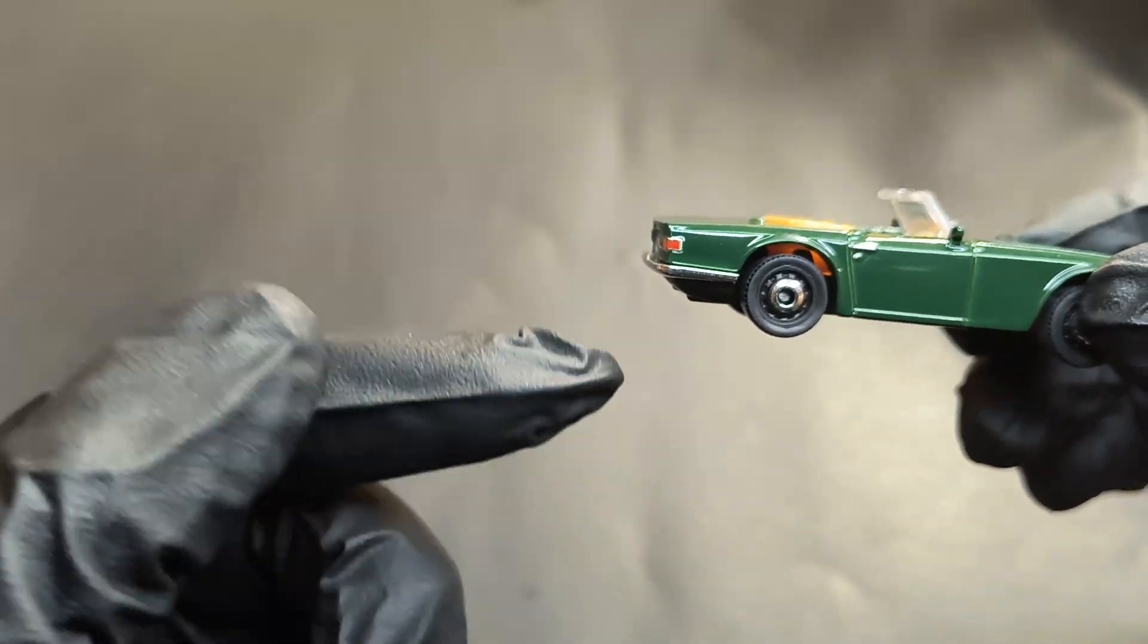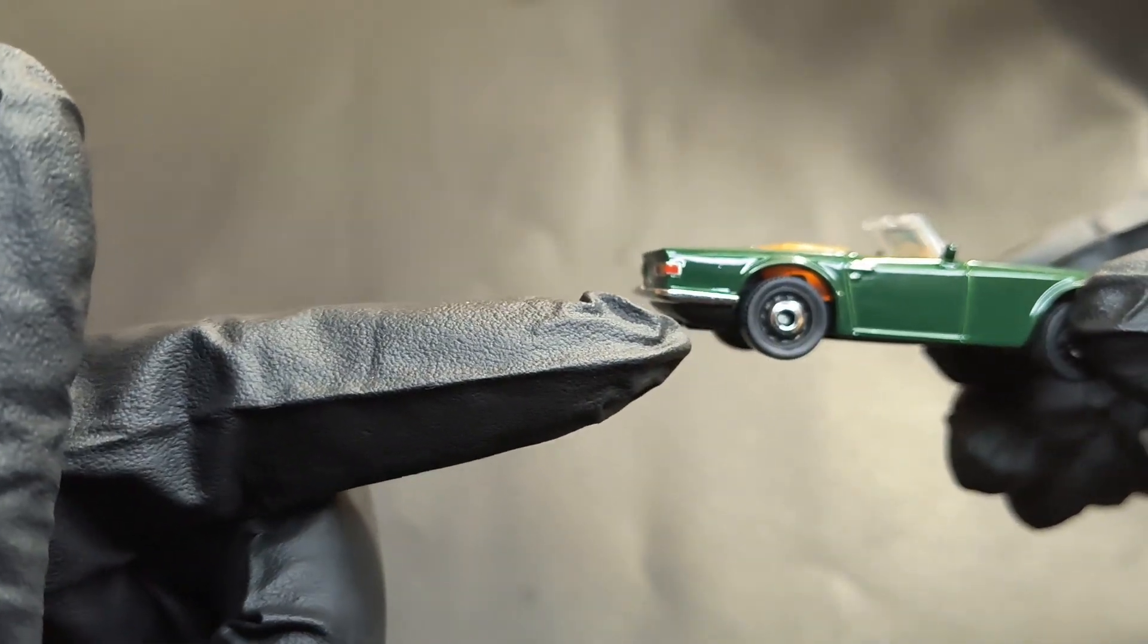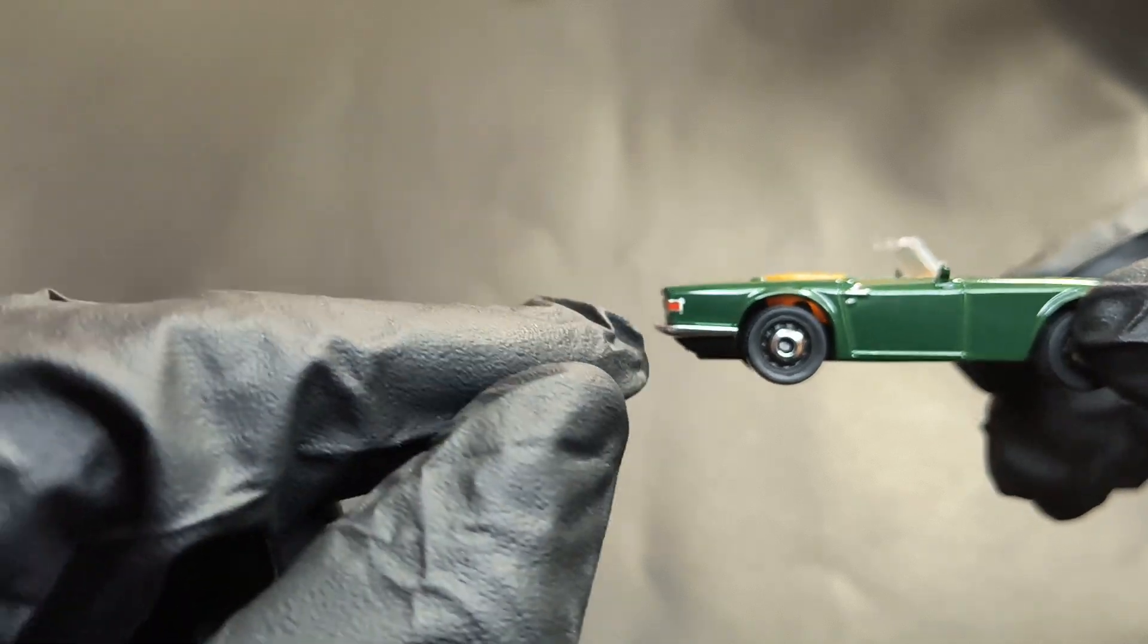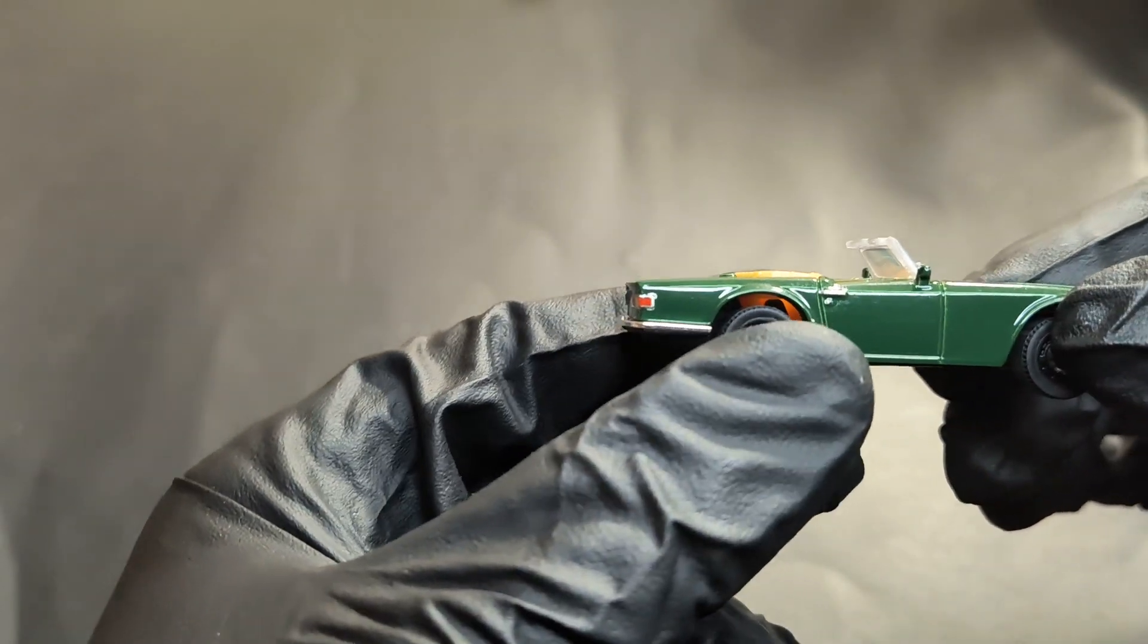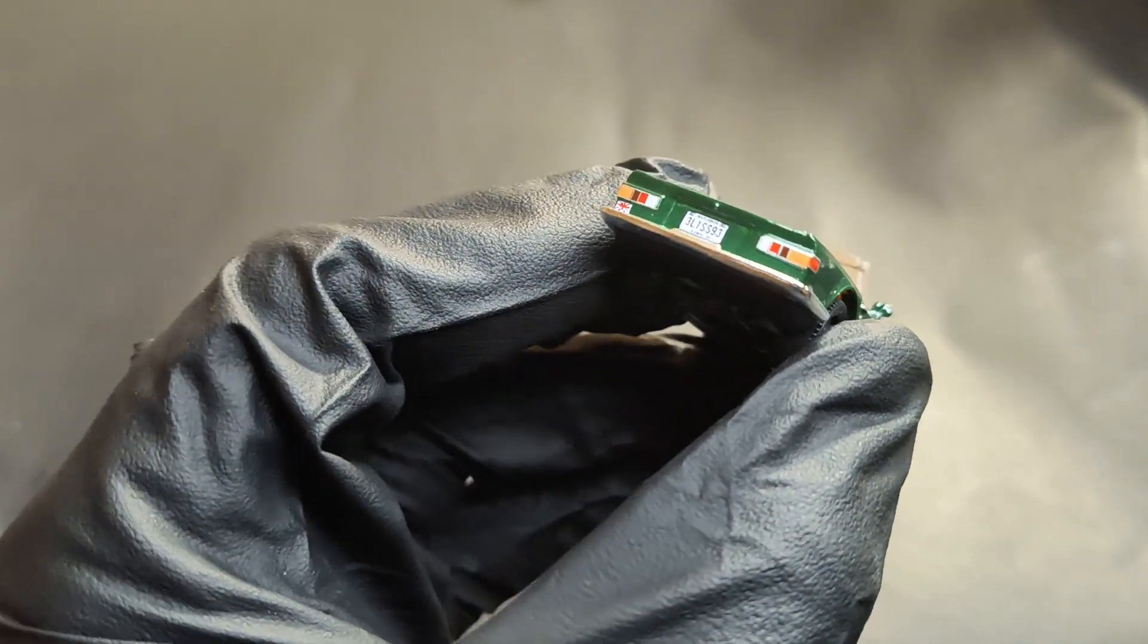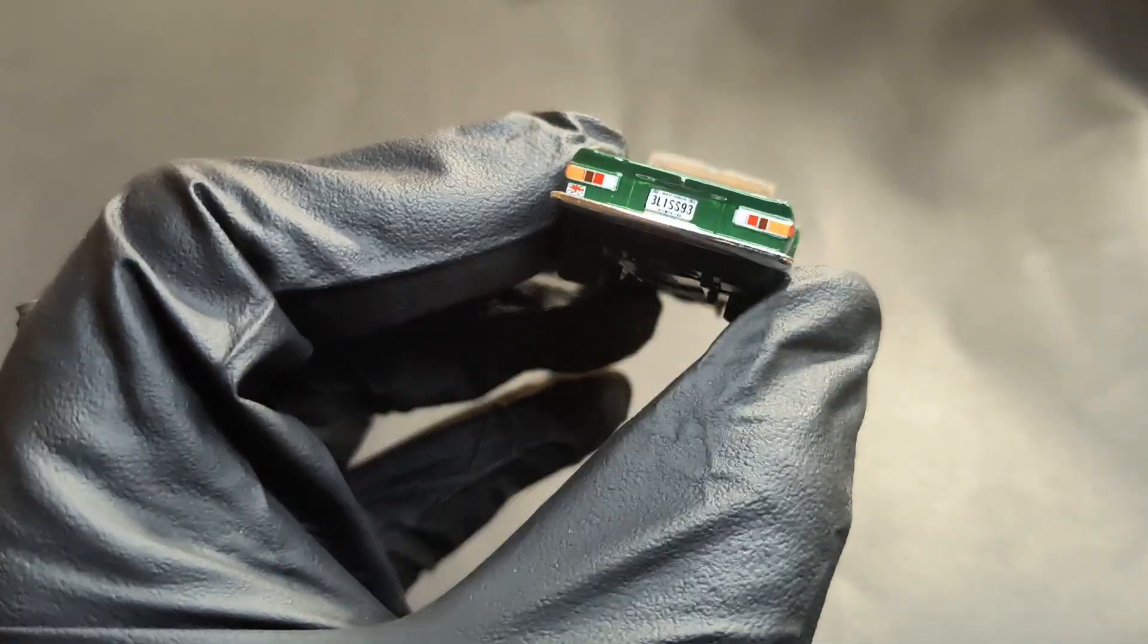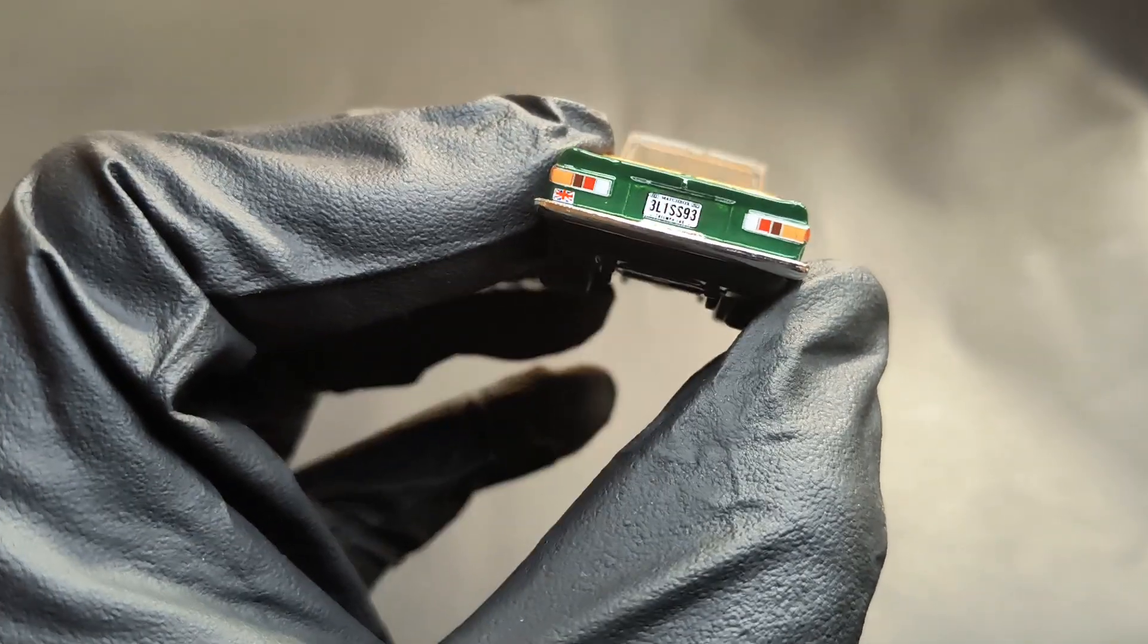Even from the side, you can notice the chrome bumper going all around and nice details on the tail lamp. You can see the chrome outlines on the tail lamps too. Let's go to the back. Again, just like the front, it's very nicely detailed.